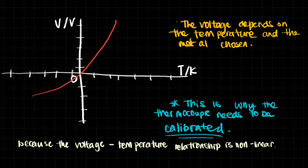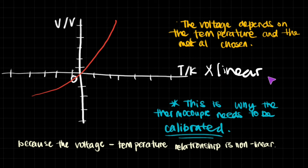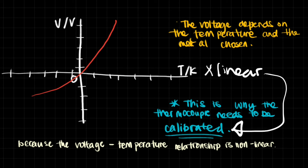To extrapolate on thermocouples: the voltage depends on the temperature and the metal chosen, which is why these thermometers need to be calibrated. If you plot temperature versus voltage, you see that it is not a straight line — it's not linear. At lower temperatures, there tend to be lower changes in voltage, and then at higher temperatures, it suddenly becomes very large changes in voltage. This graph is helpful to memorize because the voltage-temperature relationship is nonlinear. The bigger the temperature, the bigger the voltage induced for the thermocouple.